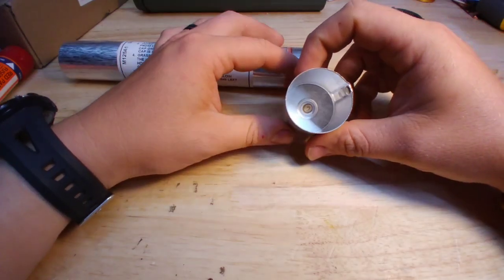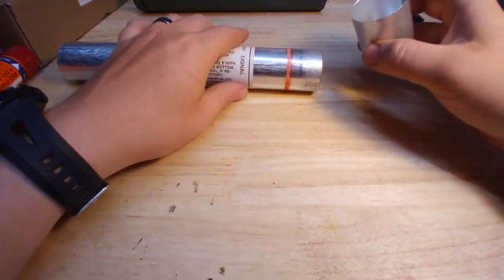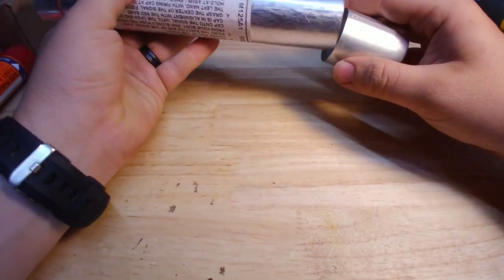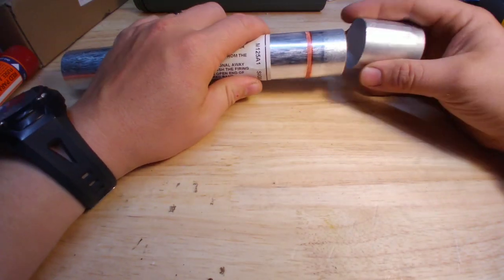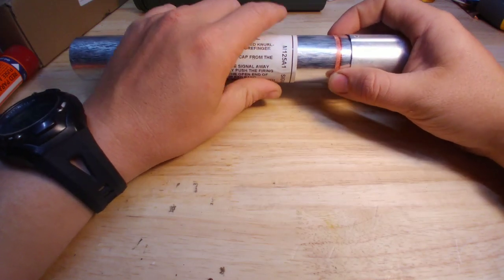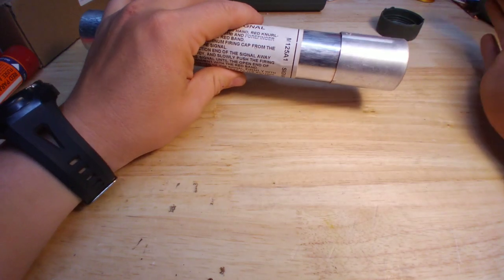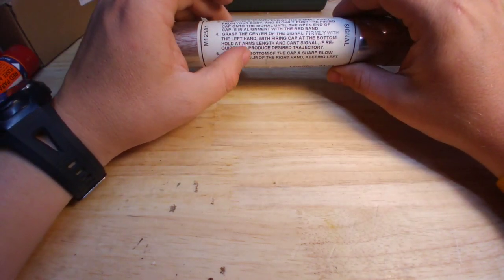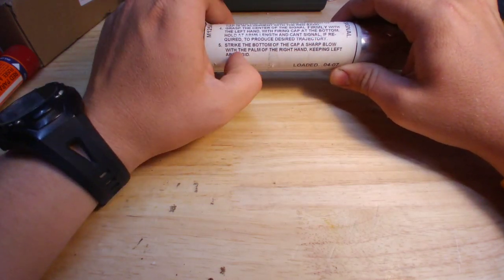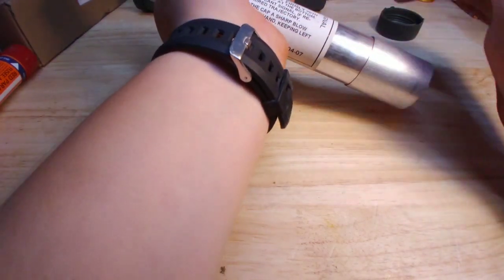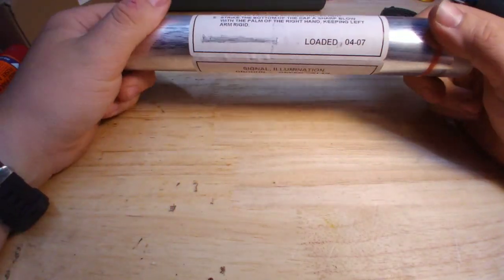Now the way you use this is the cap has a striker firing pin type thing at the bottom that lines up with that. So you take it off one end, it acts as a cap, put it on the other end, and it's kind of like a big slam fire gun. You slide it up to the red knurling, and then you strike the bottom of the cap with a sharp blow with the palm of your right hand while holding it with your left hand.